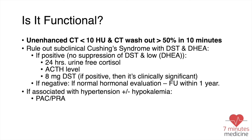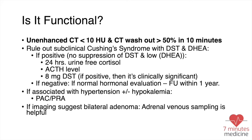If there is an association with hypertension, plus or minus hypokalemia, it may be advisable to check aldosterone concentration and renin activity. We would not do that unless there is hypertension — and this is a common board question. If imaging suggests bilateral adenoma, we might benefit from adrenal venous sampling, though this point is not entirely clear-cut and there is some debate about it.